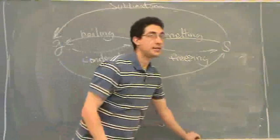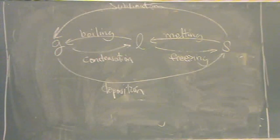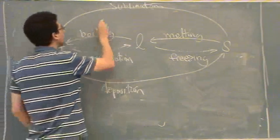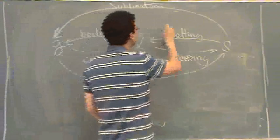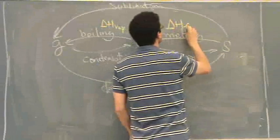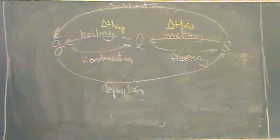Now let's get all our delta H terms straight. So boiling, that's the delta H of vaporization. Melting, that's the delta H of fusion.